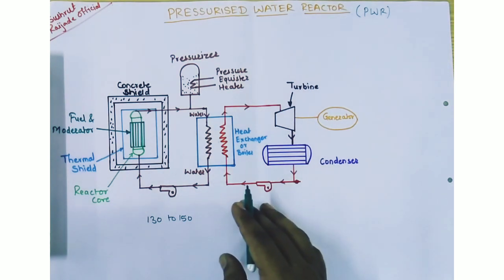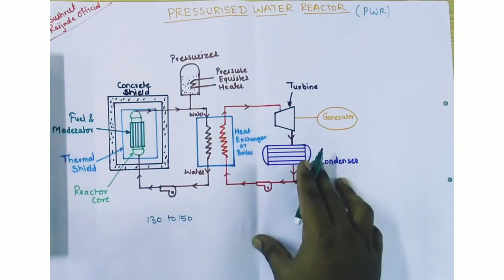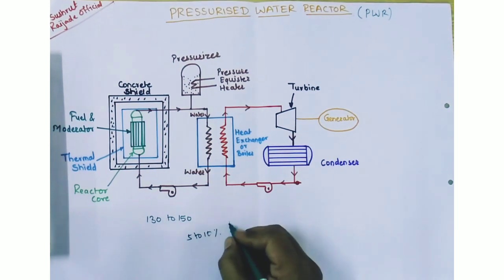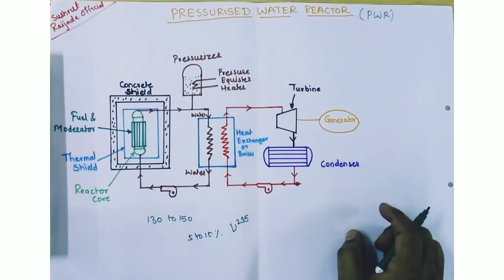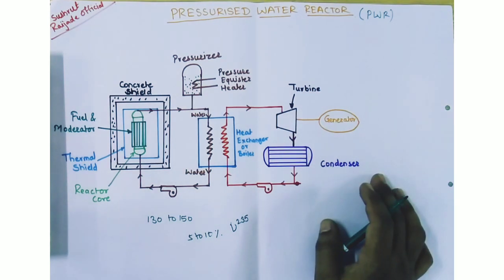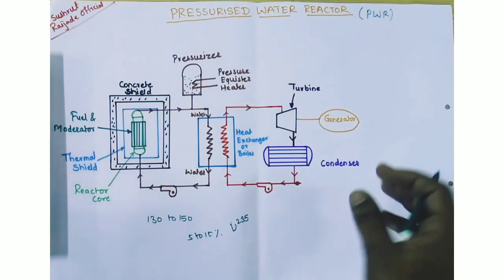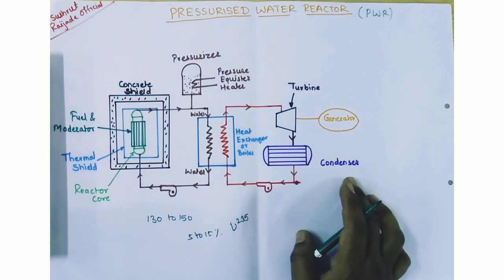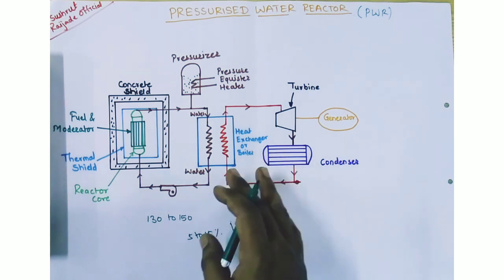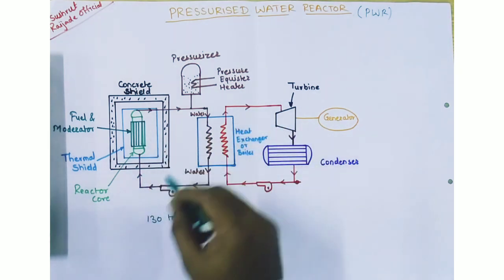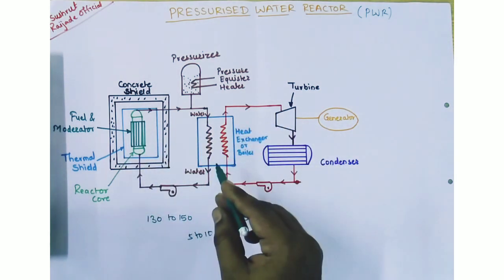The PWR power plant uses enriched uranium, which contains 5 to 10 percent of U-235. It does not require that much fuel since it uses enriched uranium. Water or heavy water under pressure is used both as a coolant and moderator in this PWR, meaning the water circulating in the core acts as both coolant and moderator.